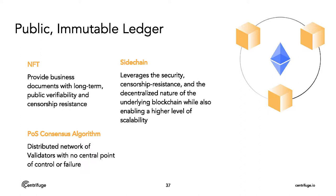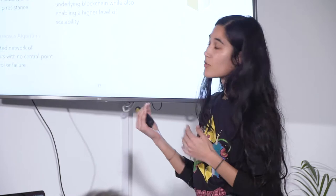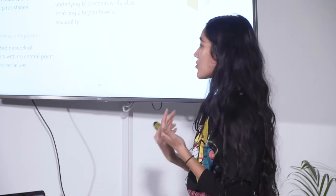Diving a little bit deeper into the public immutable ledger — also known as a blockchain — what do we really want this to be able to do? We want to be able to mint NFTs, really providing the business document with verifiability. As Philip mentioned, Ethereum is really expensive. So, using a sidechain that leverages the security and censorship resistance of an underlying blockchain like Ethereum while also enabling a higher level of scalability — that's the real reason we wanted a sidechain and not just Ethereum.